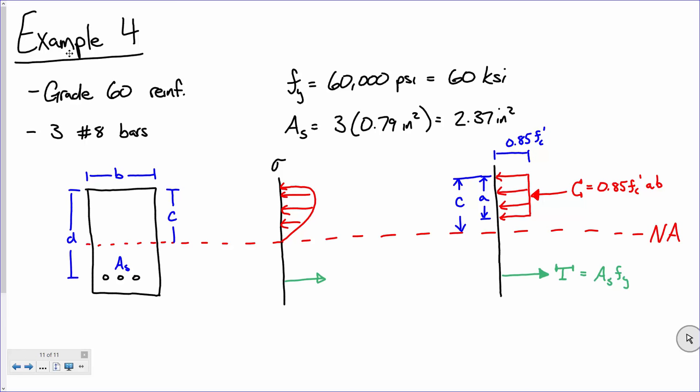That's the tensile force in the section. The compressive force in the concrete is stress times the area it's acting on: 0.85 f'c times A times B, because it's this depth acting over this beam width. Think of it as a hatched section experiencing a constant stress of 0.85 f'c, B wide and A tall — to A, not to C.